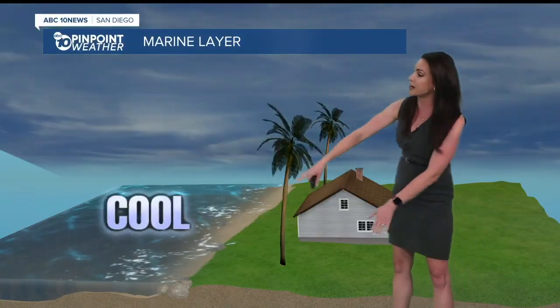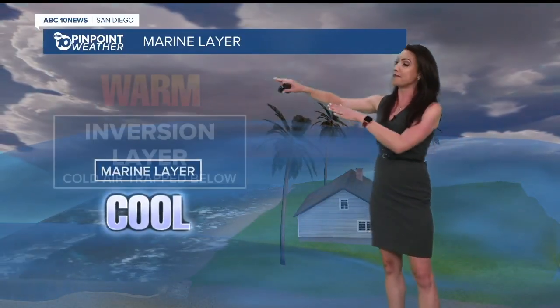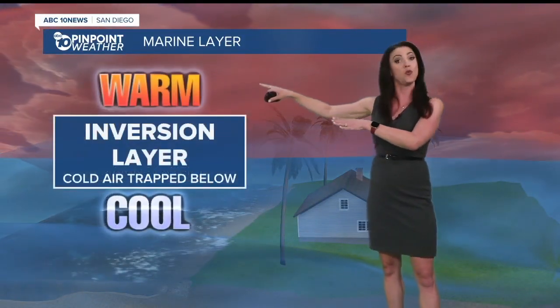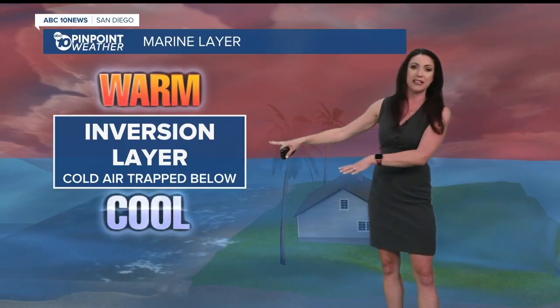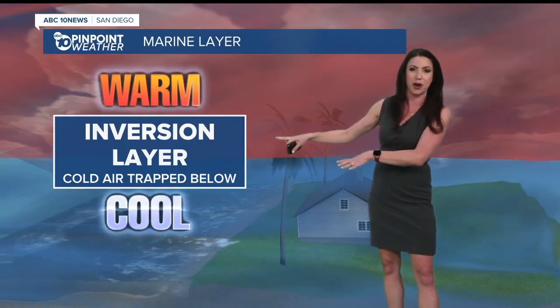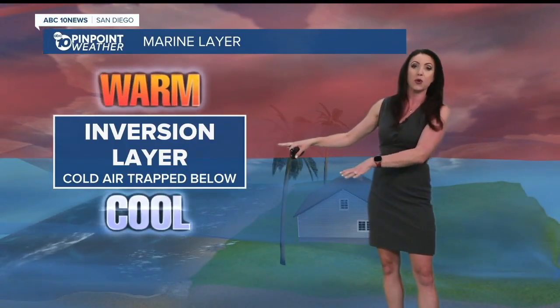That cold ocean water cools the layer of air above it. This is called the marine layer, while the layer of air above that is warmer, creating an inversion — basically a cap trapping that cold air down below.